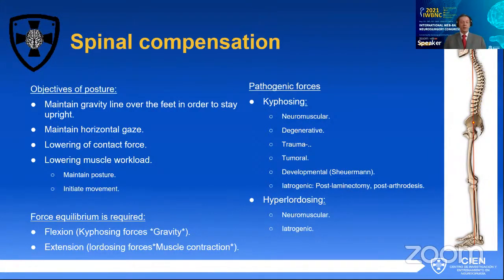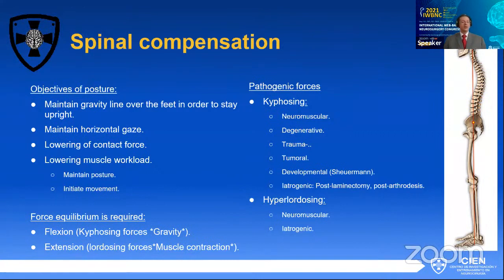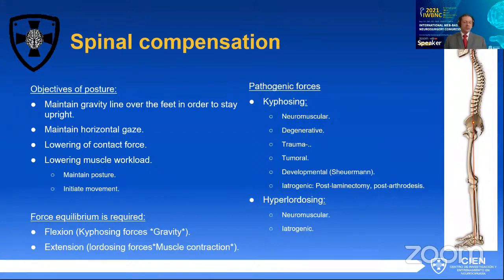For this, force equilibrium is required, and there's going to be an equilibrium between flexion or kyphosing forces and extension or lordosing forces. The vast majority of pathologic processes tend to be a kyphosing event — be it neuromuscular, degenerative disease, trauma like vertebral fractures, tumors with instability, developmental diseases like Scheuermann disease, or iatrogenic, which is probably currently one of the most important causes: post-laminectomy or post-arthrodesis kyphosing events. But there are also some more rarely hyperlordosing events, seen quite often in neuromuscular or iatrogenic cases.